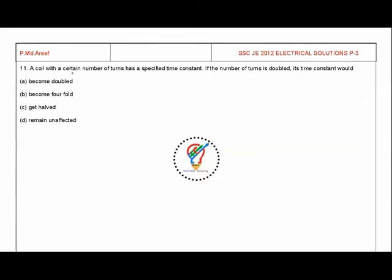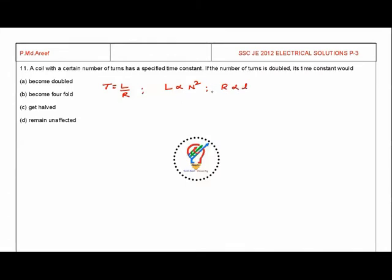The question is: a coil with a certain number of turns has a specific time constant. If the number of turns is doubled, its time constant will be? The time constant tau is L divided by R, and inductance is proportional to N squared, while resistance is proportional to L. These are the basic formulas we will use.